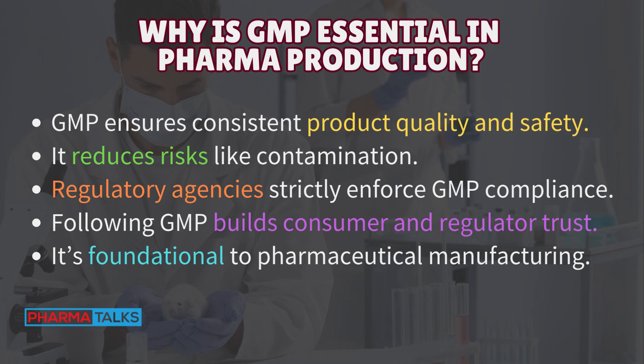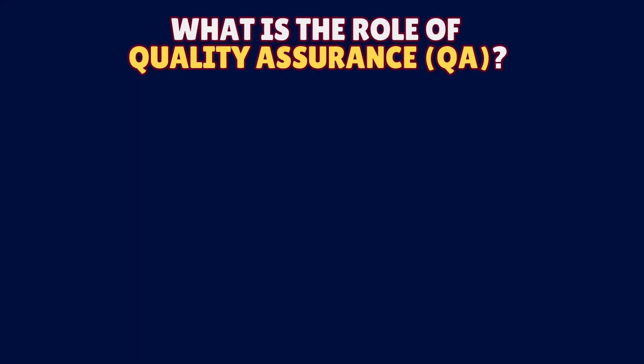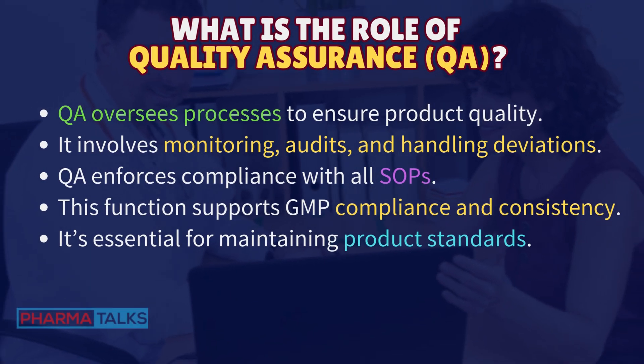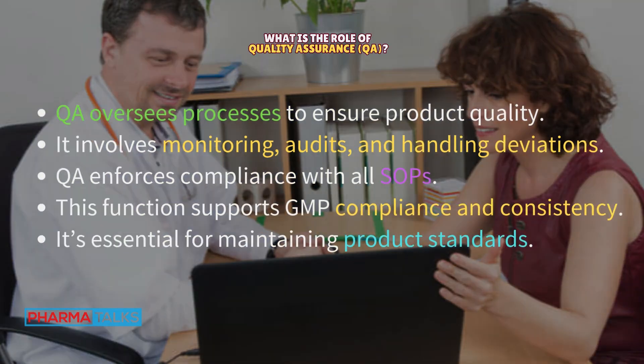GMP is foundational to pharmaceutical manufacturing. What is the role of Quality Assurance (QA)? QA oversees processes to ensure product quality. It involves monitoring, audits, and handling deviations. QA enforces compliance with all SOPs. This function supports GMP compliance and consistency. It's essential for maintaining product standards.